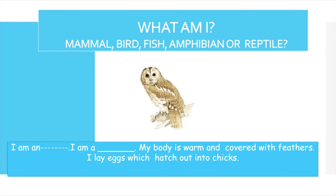Let's check out this animal — it is an owl. My body is warm and covered with feathers. I lay eggs which hatch out into chicks. So this animal is a bird because it is covered with feathers. Well done!